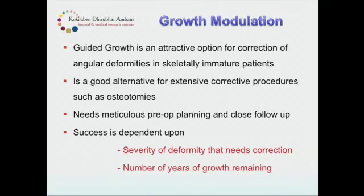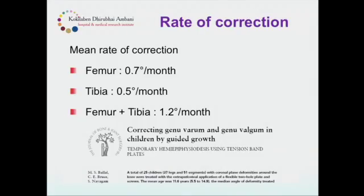Growth modulation, besides being a very simple method, is dependent on two very important things: the severity of the deformity when the child presents, and the number of years of growth remaining to correct that deformity. These two factors guide success and failure. Work from the UK tells us the rate of correction: the femur gives around 0.7 degrees per month, the tibia around 0.5 degrees per month, and combining both you can get almost 12 to 14 degrees of correction in a year.